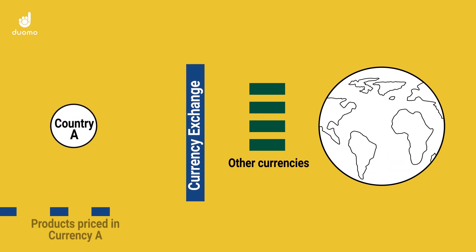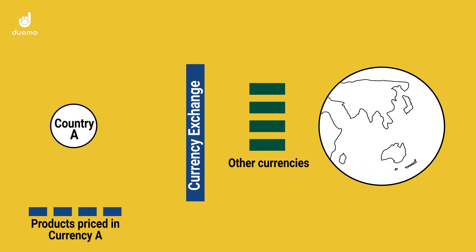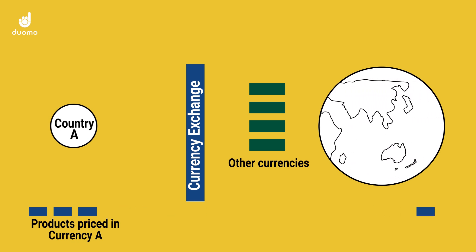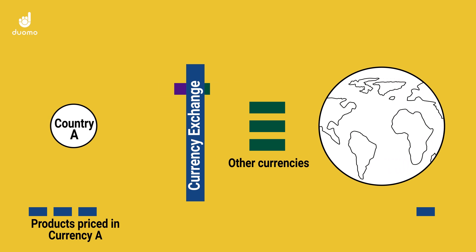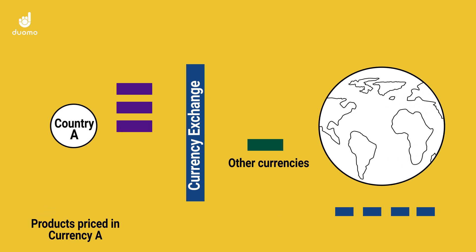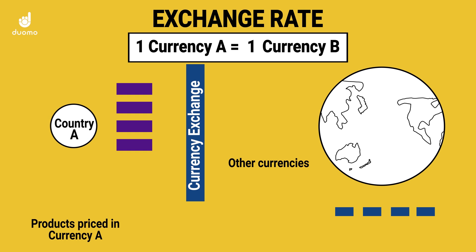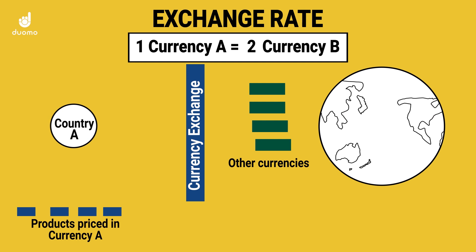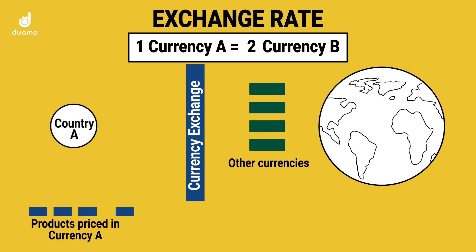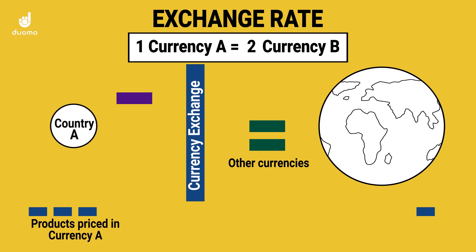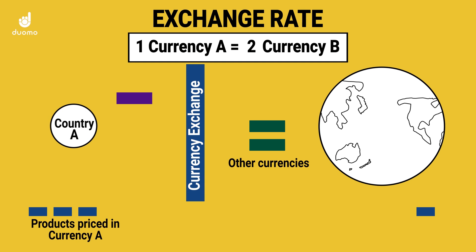In an ideal world, exchange rates will be set by the relative demand for those currencies. For example, if country A is selling a lot of products to other countries, it means other countries will want to buy the currency of country A to purchase those products. With this increase in demand, it means the price of that currency will rise, just like any other asset would. As the price of that currency rises, it makes the products relatively more expensive, since countries will need to pay more of their own currencies to obtain country A's currency.